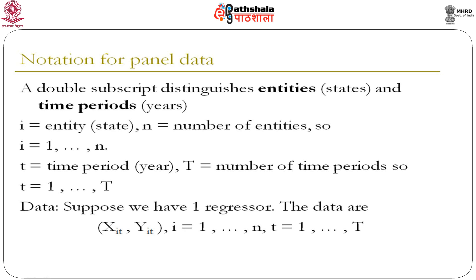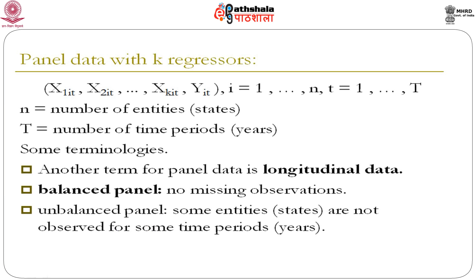Suppose you have one regression. The data are x_it, y_it, with i running from 1 to n and t running from 1 to T. Here n is the number of entities (states) and T is the number of time periods (years). Another term for panel data is longitudinal data. We are considering balanced panels — no missing observations. In an unbalanced panel, some entities are not observed for some of the periods.